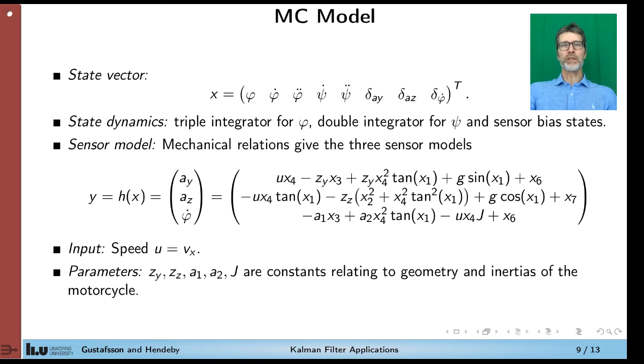The state dynamics is more or less straightforward. A triple integrator for roll angle, a double integrator for yaw rate, and the sensor bias is just a random walk. The sensor models are more complicated. They are based on mechanical relations. And from them you get these three sensor models for a_y, a_z, and phi dot. So they are all functions of the state vector and the input u here. There are also some parameters that describe the motorcycle construction, but they can be considered to be known.